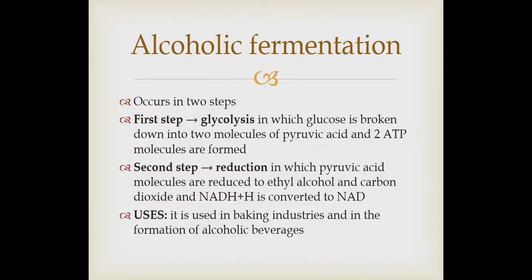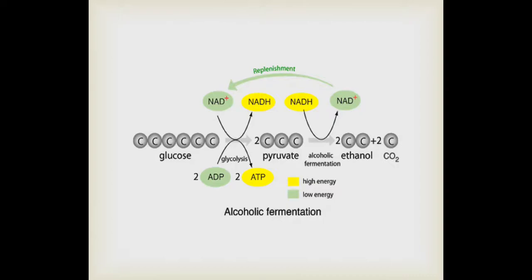The second step is reduction: the pyruvic acid molecules are reduced to ethyl alcohol and carbon dioxide, and nicotinamide adenine dinucleotide (NADH) is converted into its oxidized state, NAD+. This process is used in baking industries and in the formation of alcoholic beverages. In the reaction: glucose (six-carbon) is first converted into pyruvic acid (three-carbon) in glycolysis, during which NAD+ is converted into NADH, and ADP combines with inorganic phosphate to form ATP.